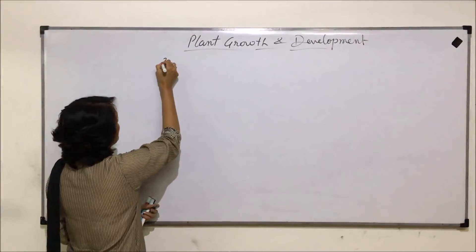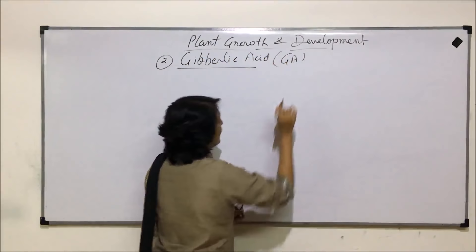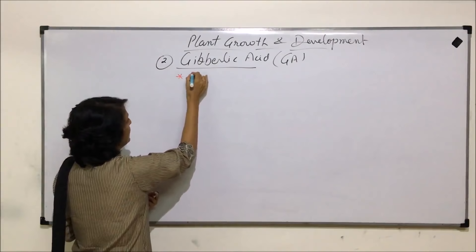The next phytohormone we are starting with is gibberellic acid, written as GA. We have seen that these are derivatives of terpenes.